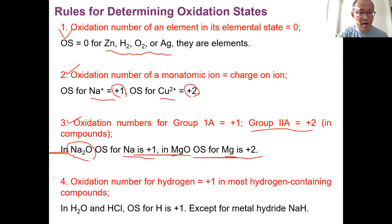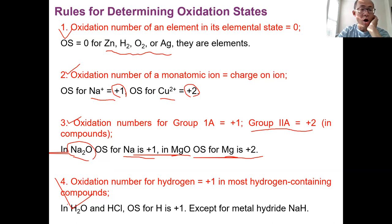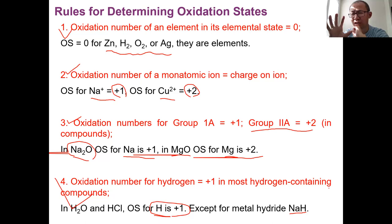Rule number four: the oxidation number for hydrogen in a hydrogen-containing compound is mostly +1 in most cases. If you see hydrogen in a compound, like water or HCl, the oxidation number for hydrogen is +1 in most cases. The exception is metal hydrides — if you have a metal combined with hydrogen, that's different. But the rule here is the oxidation number for hydrogen in a hydrogen-containing compound is, in most cases, +1.